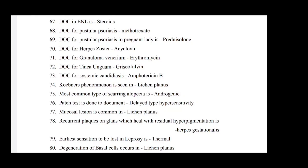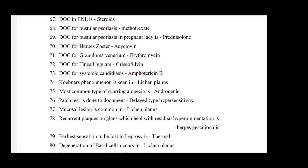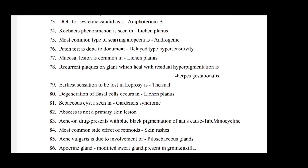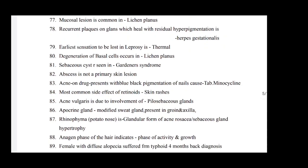Drug of choice for tinea unguium is griseofulvin. Drug of choice for systemic candidiasis is amphotericin B. Koebner phenomenon is seen in lichen planus. Most common type of scarring alopecia is androgenic. Patch test is done to document delayed type hypersensitivity. Mucosal lesion is common in lichen planus. Earliest sensation to be lost in leprosy is thermal sensation. Degeneration of basal cells occurs in lichen planus. Sebaceous cysts are seen in Gardner syndrome.